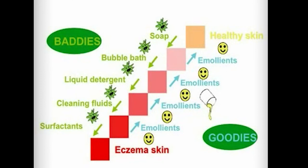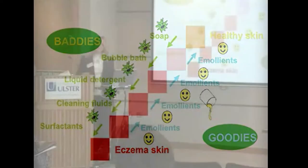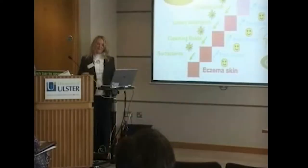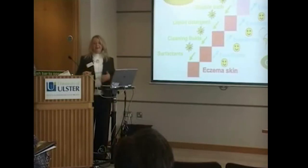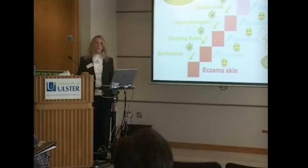There are some good things and some very bad things that we can do for the skin. The baddies include things like harsh soap, harsh bubble bath, liquid detergents, cleaning fluids, and surfactants. But there are also very good things you can do for the skin, and the best thing to protect the skin barrier is actually the use of emollients.